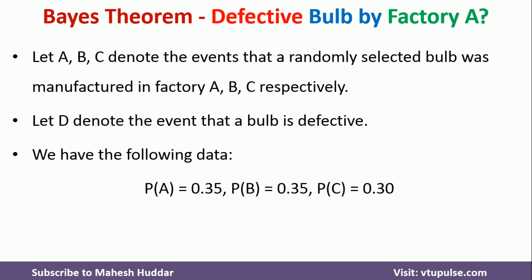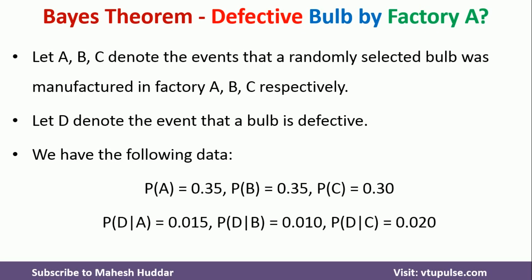Additionally, the probability that a bulb is defective given it is produced at factory A is 1.5%, which equals 0.015. The probability that the bulb is defective given it is produced at factory B is 1%, which equals 0.01. The probability that the bulb is defective given it is produced at factory C is 2%, which equals 0.02.